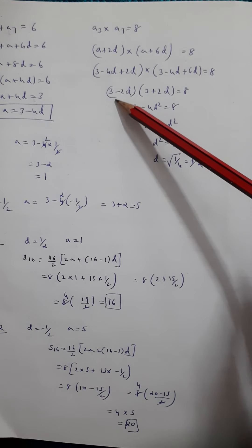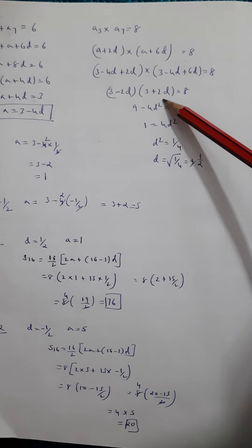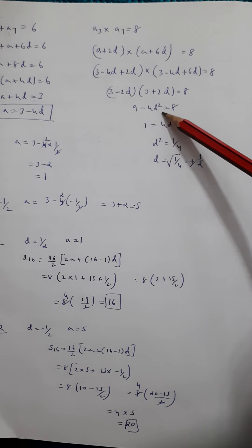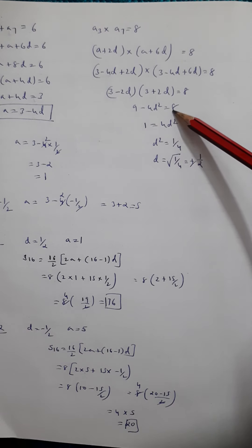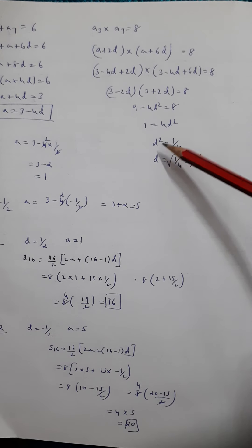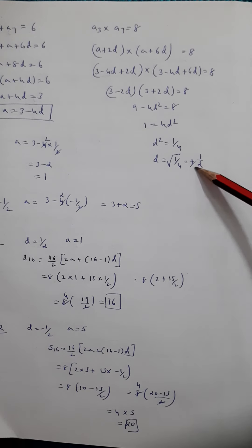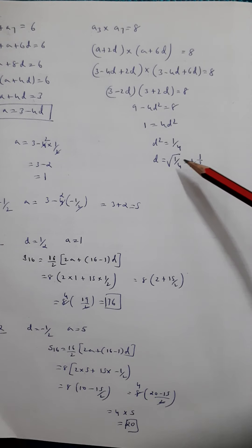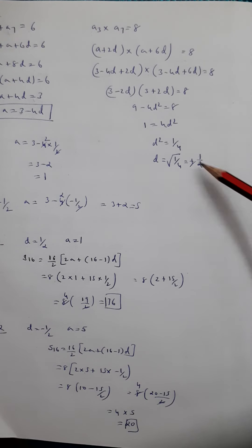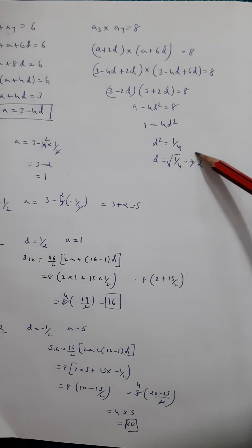Simplifying the brackets gives (3 minus 2d)(3 plus 2d), which is in the form of (a minus b)(a plus b), the identity a squared minus b squared. So we get 9 minus 4d squared equals 8. Solving: 9 minus 8 equals 4d squared, so 4d squared equals 1, d squared equals 1/4. Therefore d equals plus or minus 1/2. Remember to take both the positive and negative cases — writing only 1/2 would be incomplete and you will lose marks.